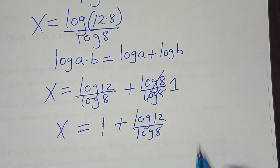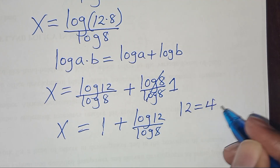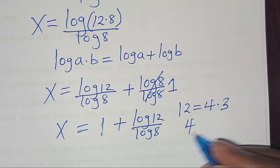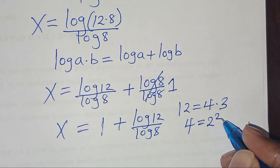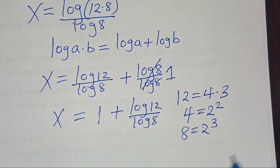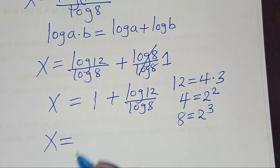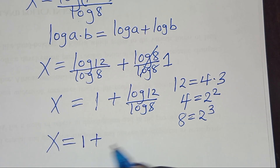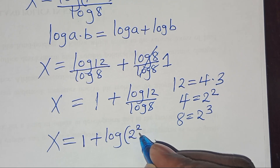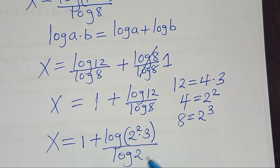Next, we express 12 as 4 times 3, and 4 as 2 to the power 2, and also express 8 as 2 to the power 3. Substituting, we have x equals 1 plus log(2² × 3) divided by log(2³).